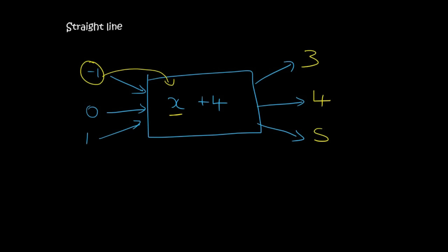We said that these were our x values and these were our y values. So if I make a little table quickly, so when x is minus 1, then y is 3. When x is 0, then y is 4 and when x is 1, y is 5.